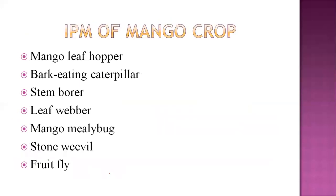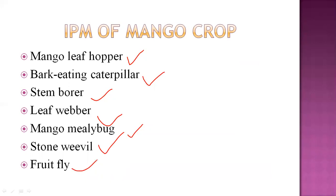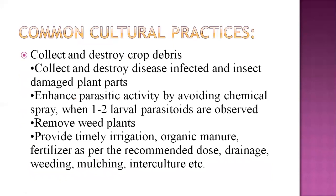Now let's look at the mango crop. The major pests of mango are: mango leaf hopper, bark eating caterpillar, stem borer, mango mealybug, stone weevil, and fruit fly. These are all the major pests of the mango crop.